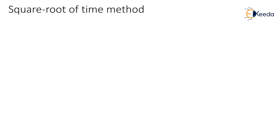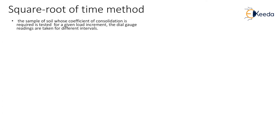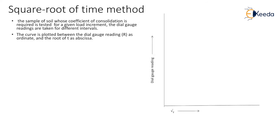The first method for the determination of coefficient of consolidation is the square root of time method. This method was discovered by Taylor. He utilized the theoretical relationship between U, that is degree of consolidation, and root of time factor. The sample of soil whose coefficient of consolidation is required is tested for a given load increment. The dial gauge readings are taken for different time intervals, and the curve is plotted between the dial gauge readings R as ordinate and the root of T as abscissa. Here we can see such a plot, indicated by ABCD.